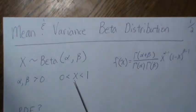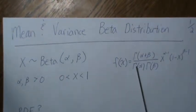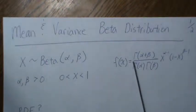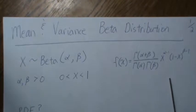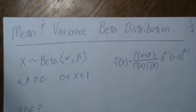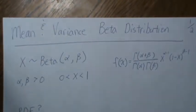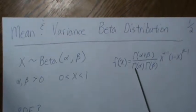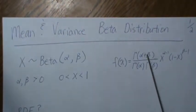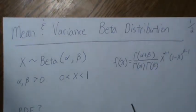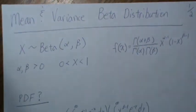Our domain is X values between 0 and 1. The density can be written as this, where these are gamma functions and X to the alpha minus 1, 1 minus X to the beta minus 1. I have a video on the gamma function and properties of the gamma functions if you search that.